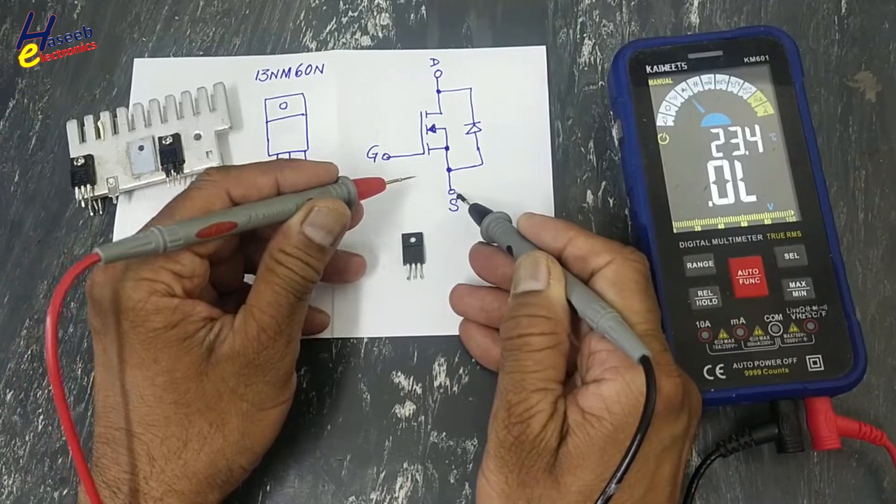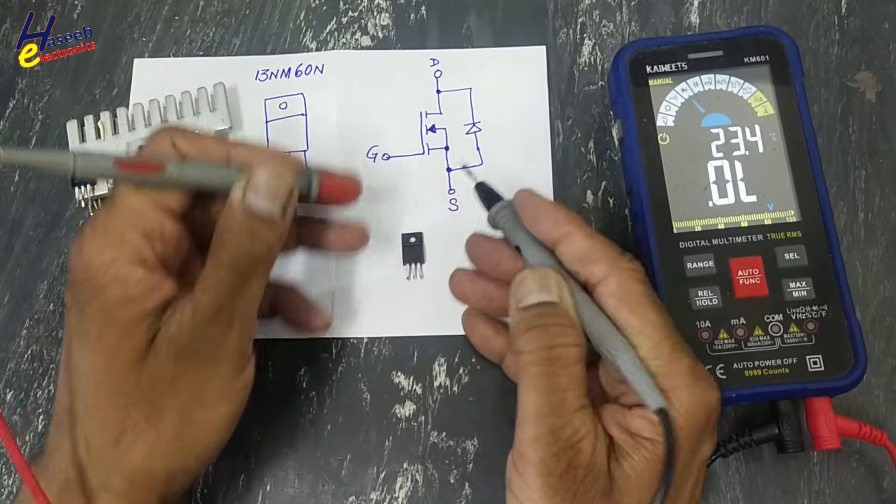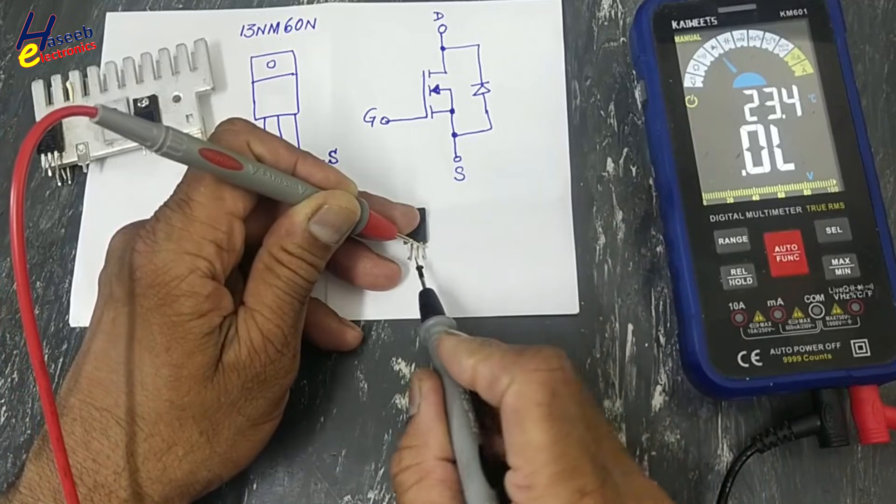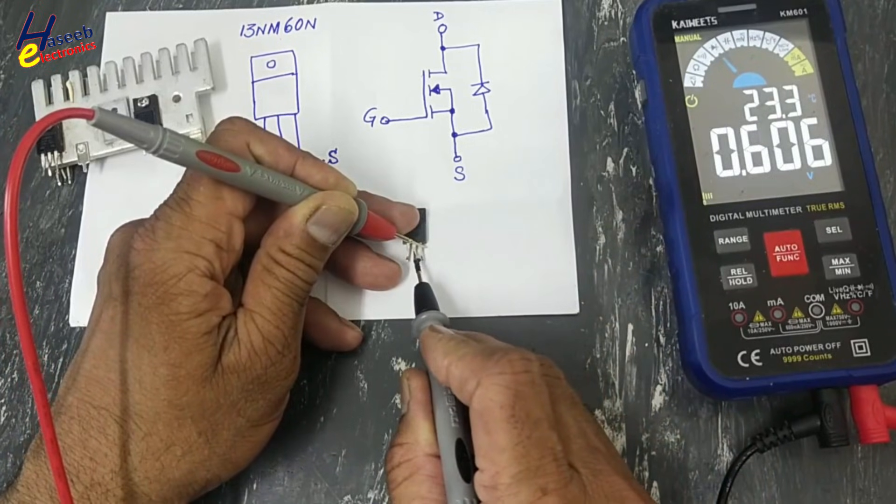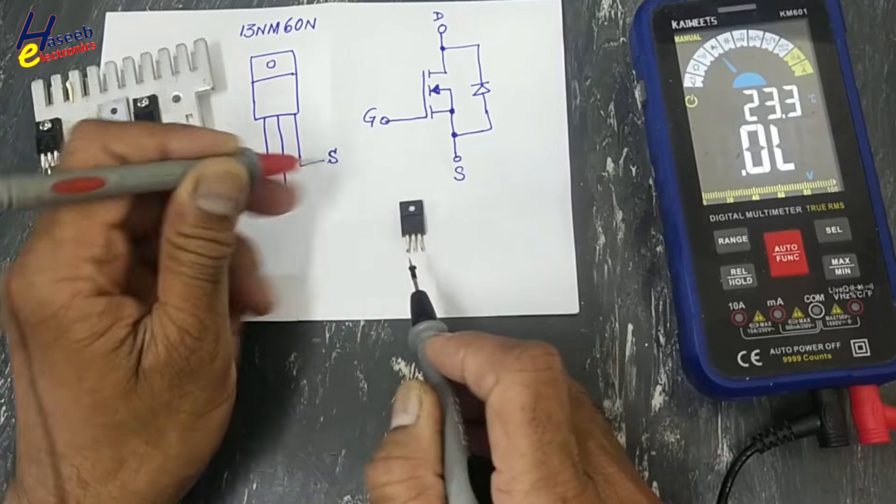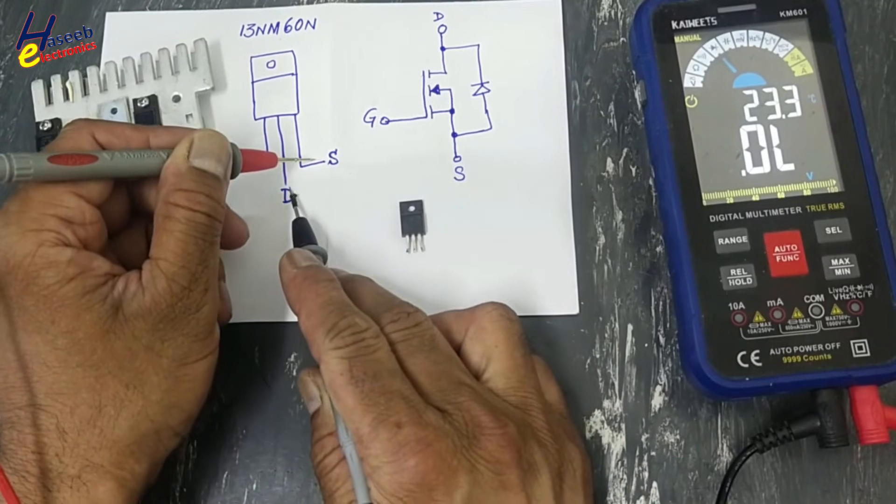First we will check this good MOSFET. Black lead at source, red lead at drain - open circuit. Swap the leads. One diode drop voltage between these two pins in this direction.